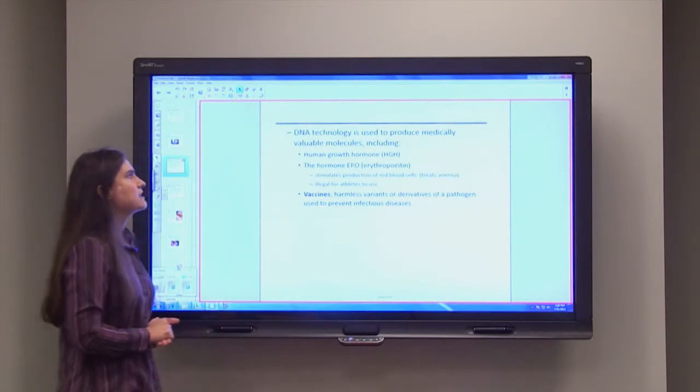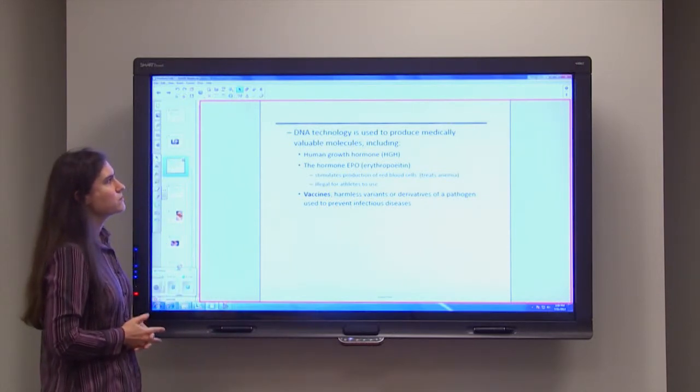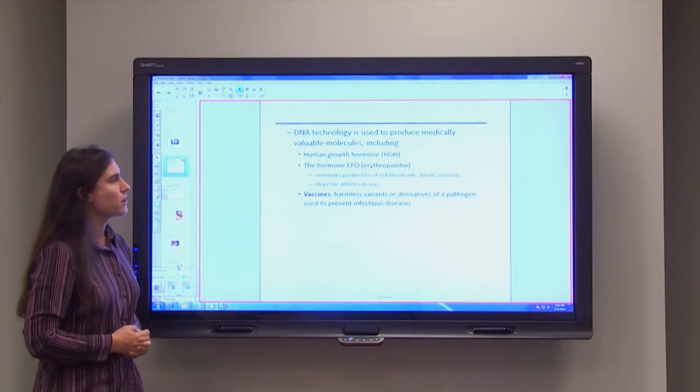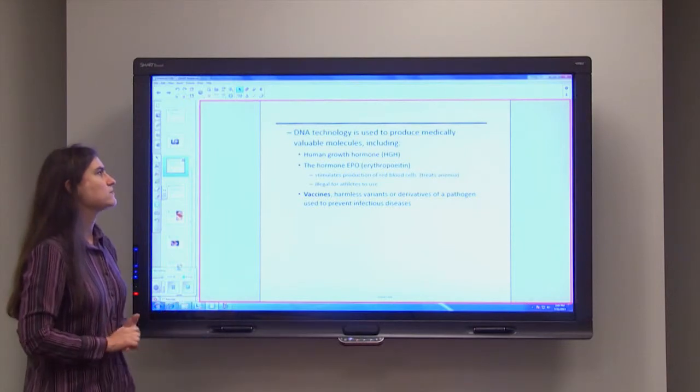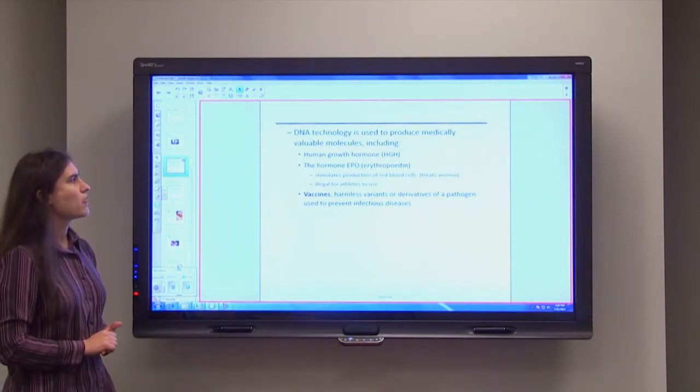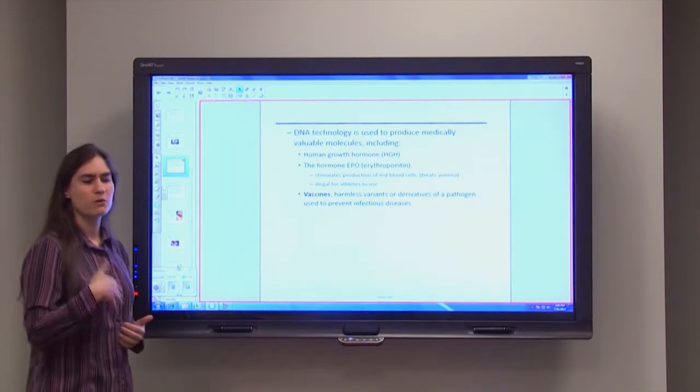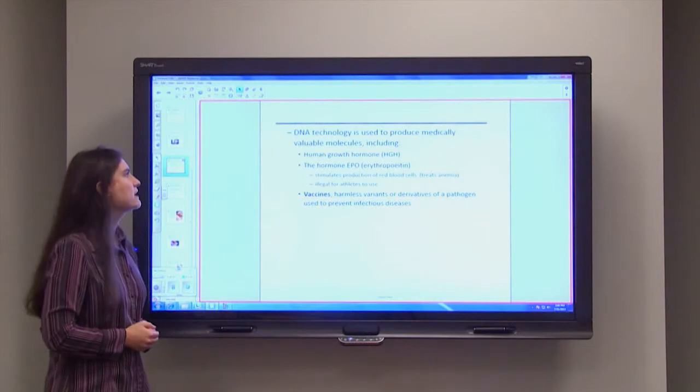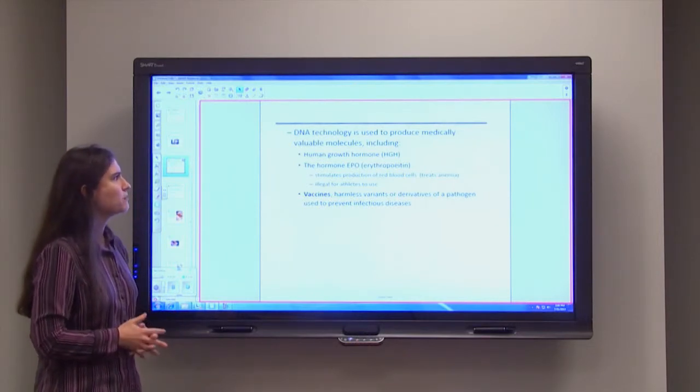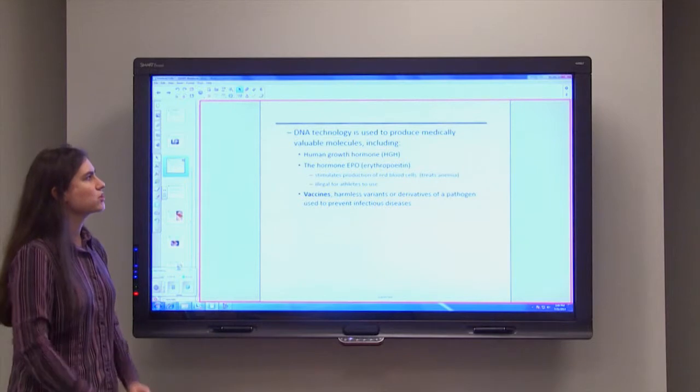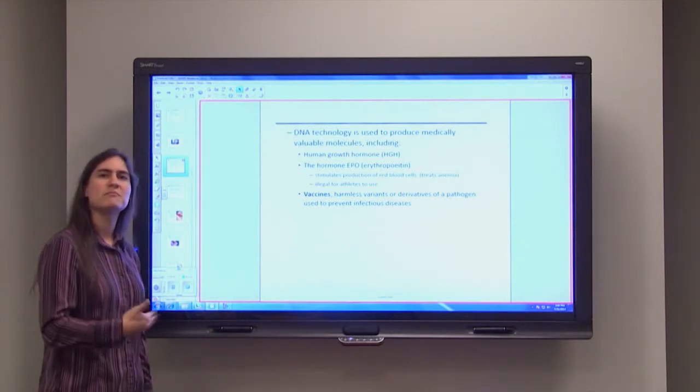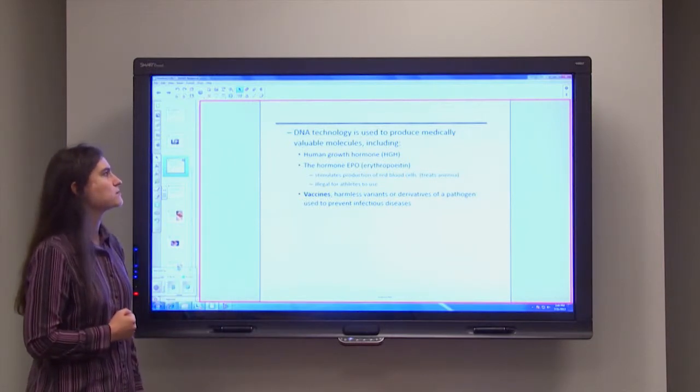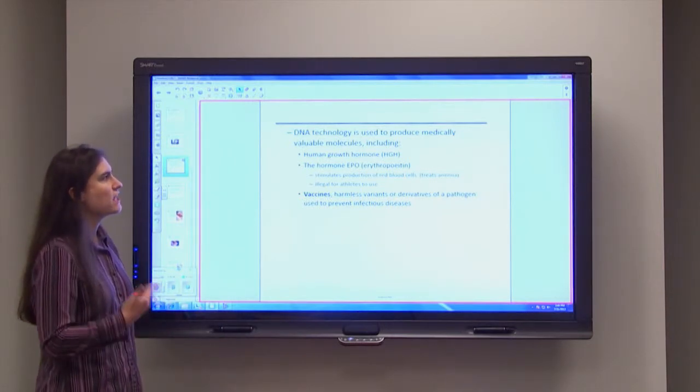In addition to that, DNA technology can be used to produce medically valuable molecules, including human growth hormone or HGH, the hormone EPO or erythropoietin, and also be used to make vaccines. So human growth hormone can be given to individuals who have a naturally short stature. And so that can help them grow to the appropriate height. The human hormone EPO can stimulate the production of red blood cells. So if somebody has anemia and isn't able to make enough of these red blood cells, we can give them this drug product that's produced from those other organisms, those genetically modified organisms, and treat the anemia.